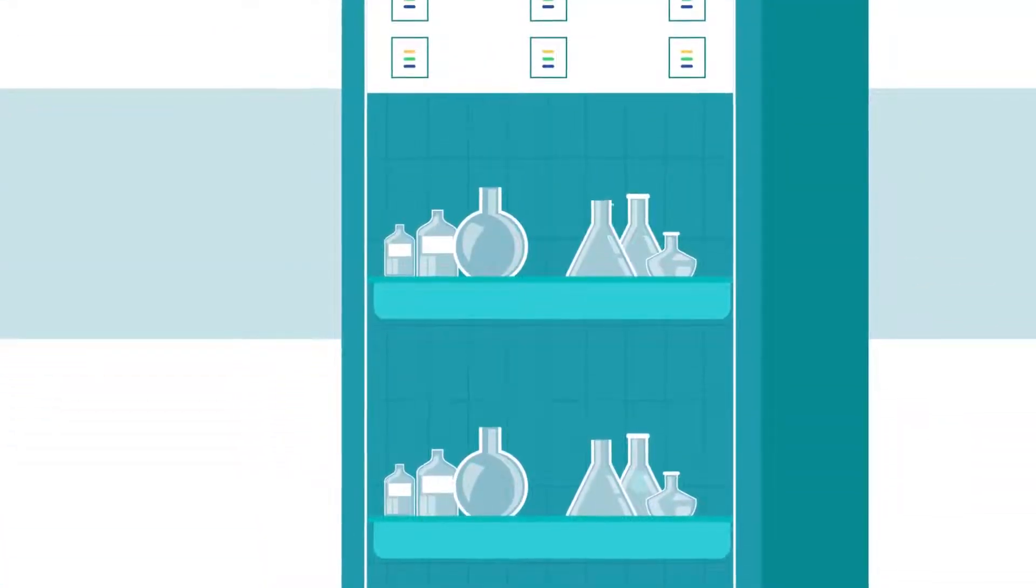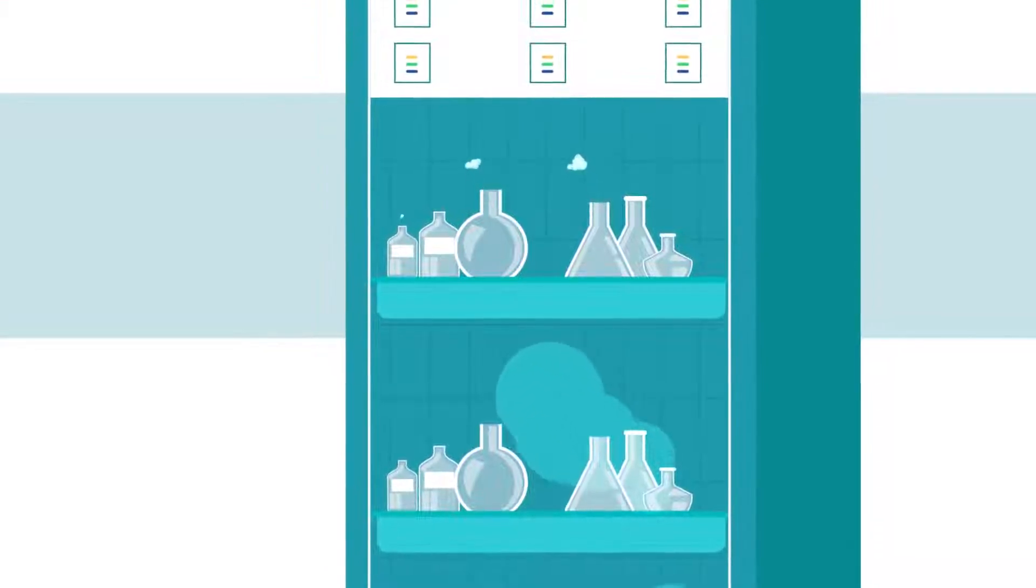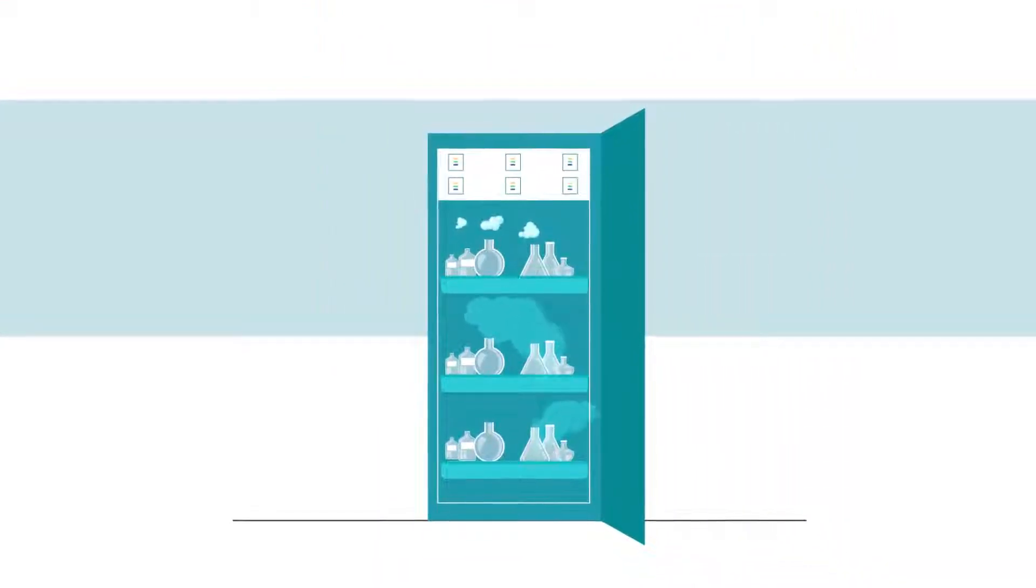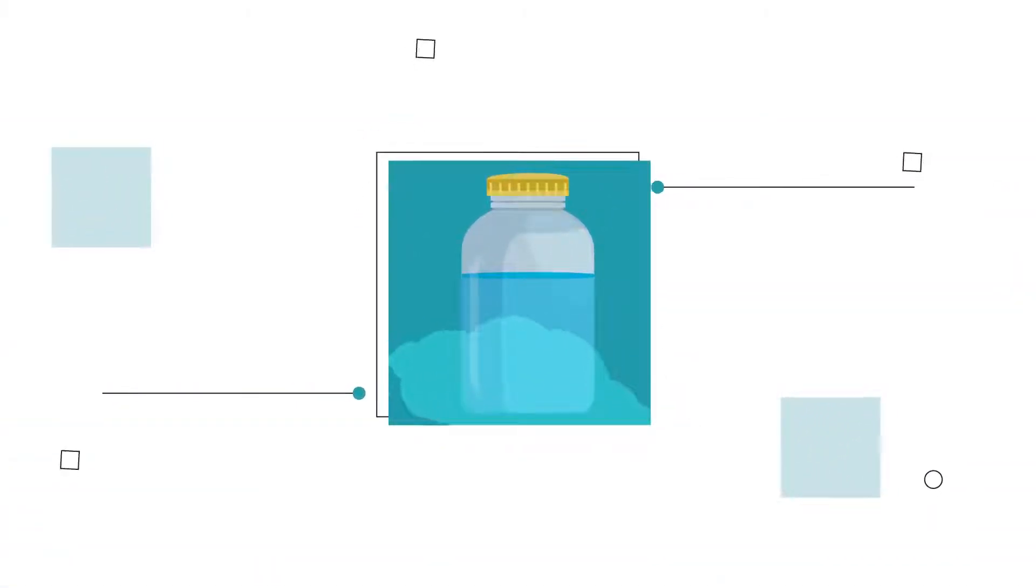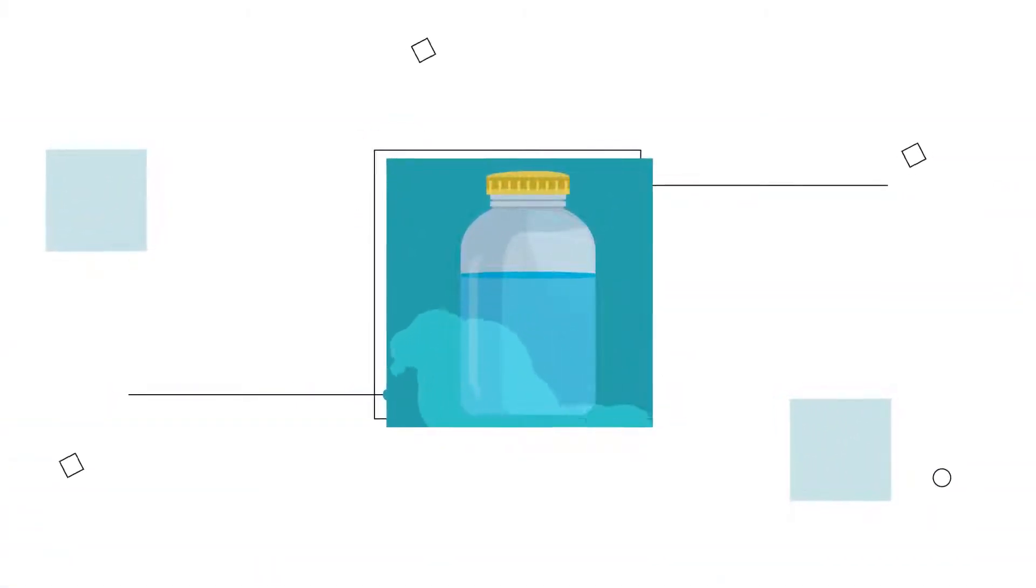When you sterilize solid items like glassware, steam comes into direct contact with the surfaces of the items you're sterilizing. But when you sterilize liquid in a container, the steam from the autoclave never comes into contact with the liquid.